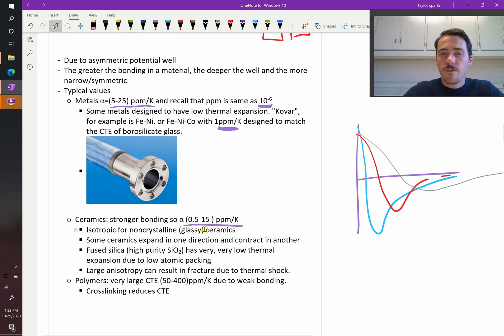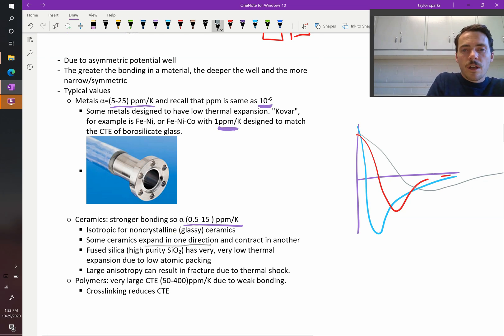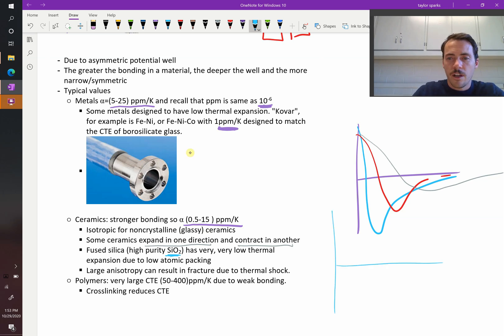They tend to be isotropic for glasses, meaning they expand equally in all directions, because it's a disordered structure. It's not a crystalline structure. It is possible for some ceramics to expand in one direction but shrink in another. There's some interesting ceramics that'll do that. A really important material in terms of ceramics and thermal conductivity is just quartz. Pure silica has a very, very low thermal expansion coefficient. In fact, it's almost zero. If you plot it, I think it actually goes slightly negative, and then it comes up just a little bit, but it's basically zero over a really broad range. It's so cool.